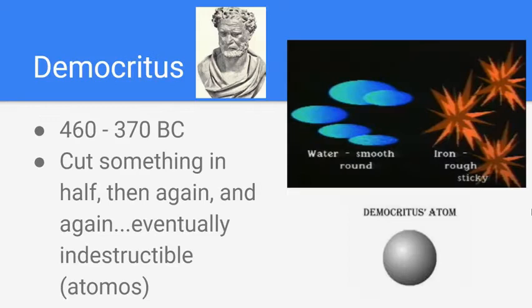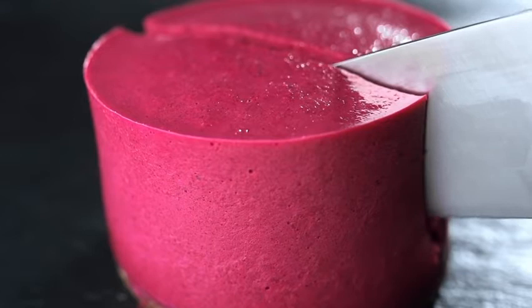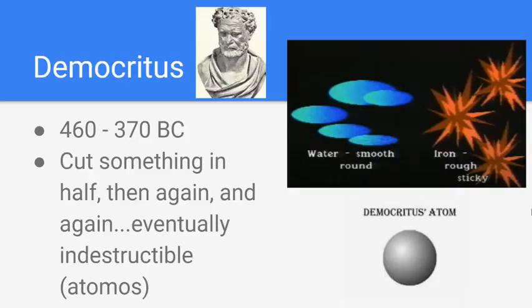If we focus specifically on the atom, the first true person to write something down about the smallest possible pieces is the ancient Greek Democritus, who lived from 460 to 370 BCE. He proposed that if you take anything — say a large cake — and keep cutting it in half, you'll eventually reach a piece so small it's indestructible. That indestructible piece he called atomos, the Greek word for indestructible. That's the atom. He even suggested different kinds of atoms — water had smooth, round ones, while iron had rough, sticky ones.